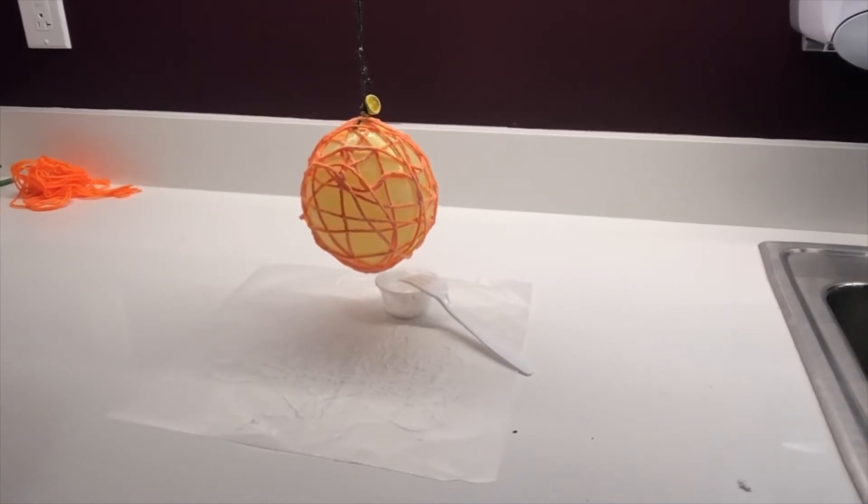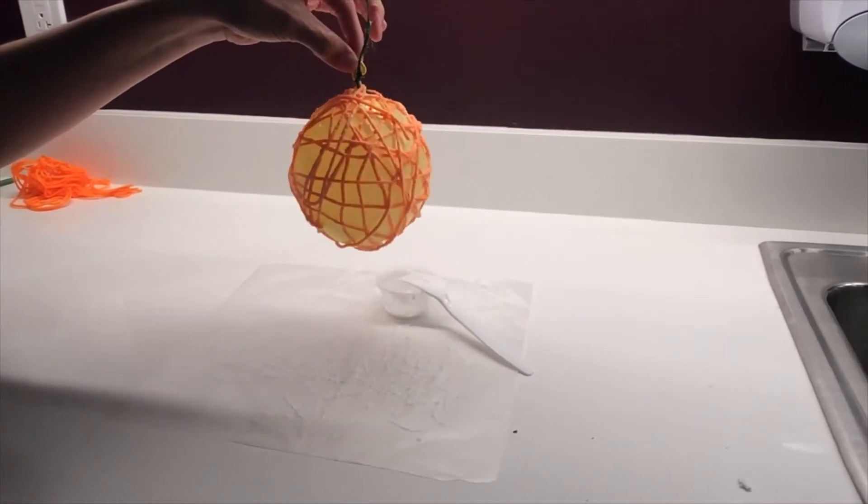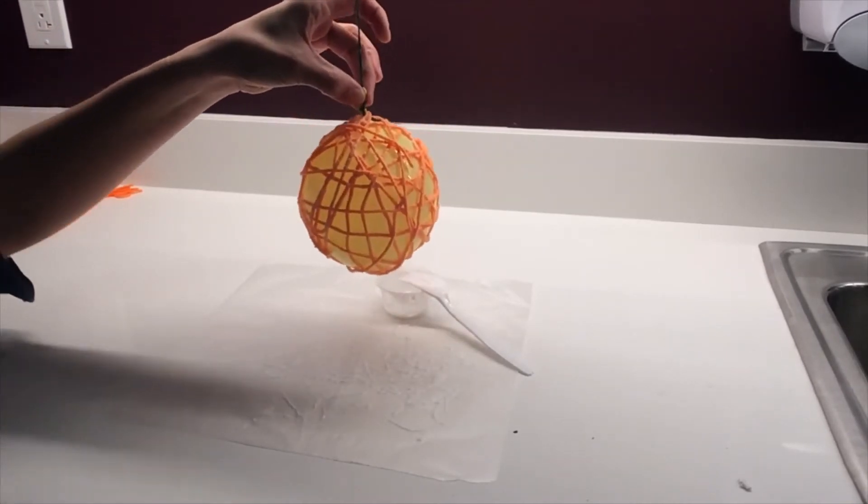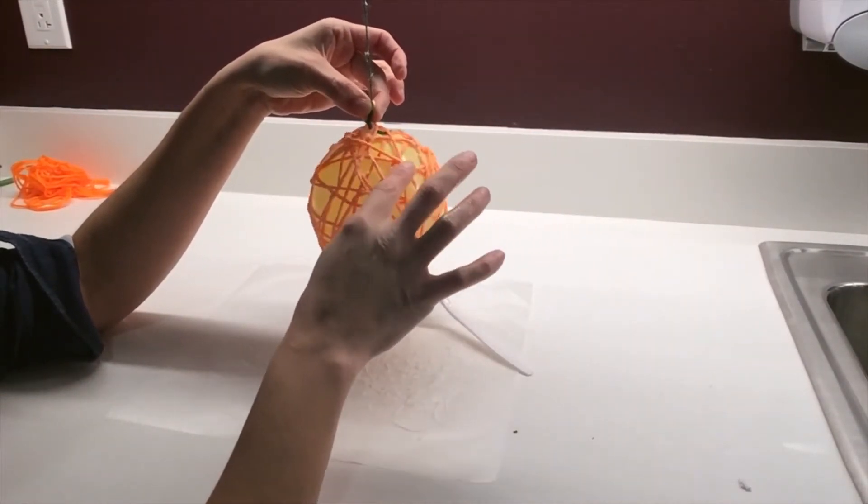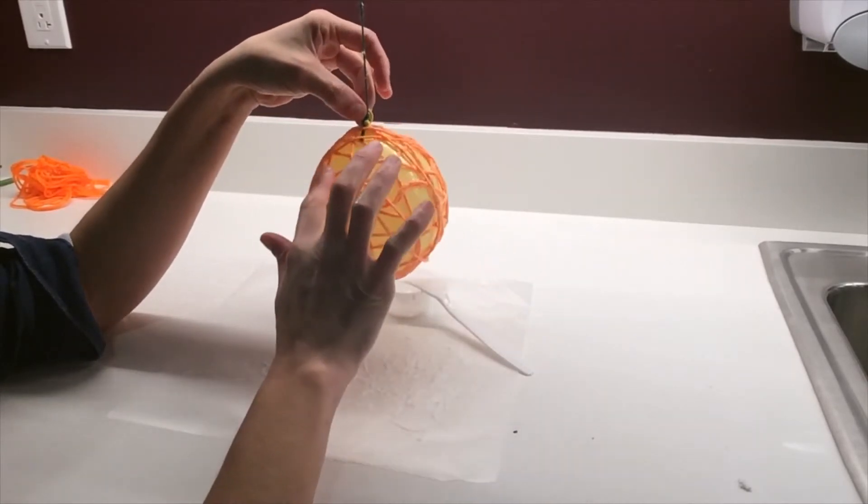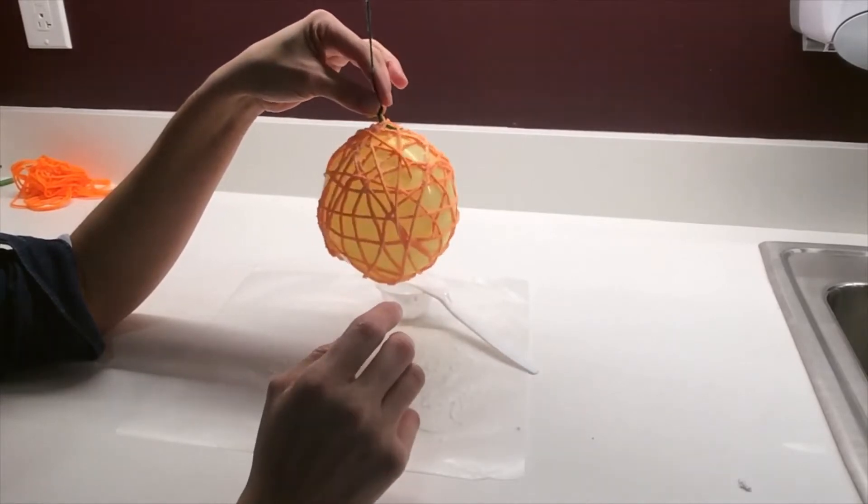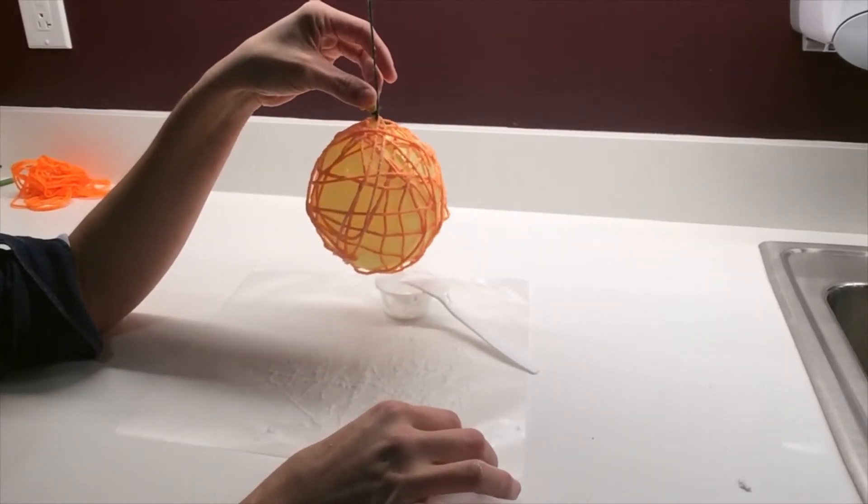Now that we've run out of glue and covered most of the area of our balloon with yarn, it's time to let it dry. You may have some pieces of yarn that are hanging down, some end pieces. You can just tuck those down onto the balloon and let them dry. If they're still sticking up when it's dry, we'll trim them with the scissors. But for now, let's let it sit and dry for 24 hours.